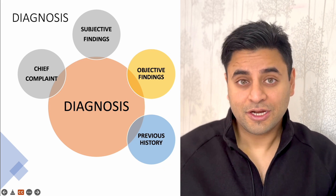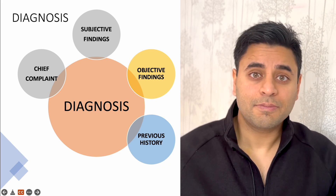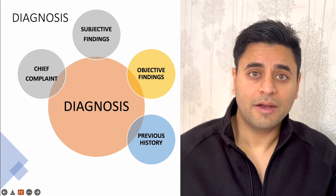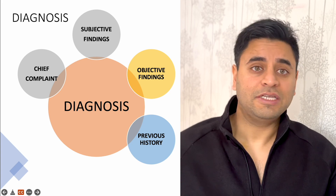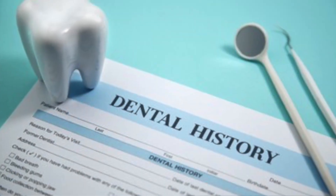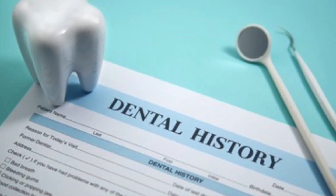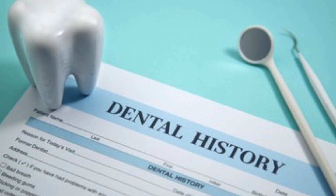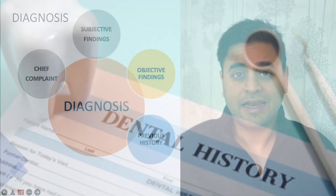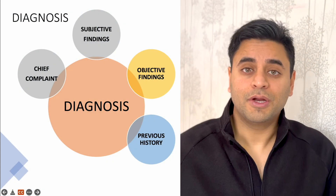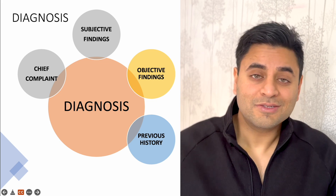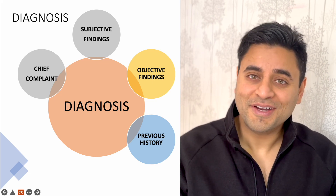Next, we'll talk about previous history, because so many things depend on it. Did the patient have a trauma in the past? Did the patient fall, or was it an orthodontic treatment? Was there a previous root canal or a previous restoration? So many different factors can help you arrive at a correct diagnosis when you take a proper history.